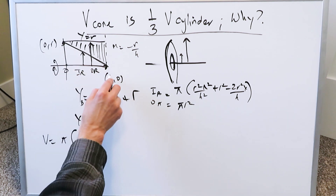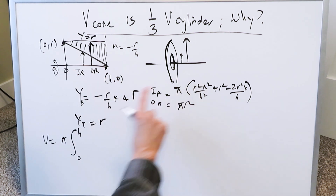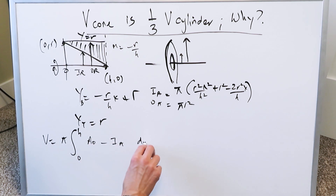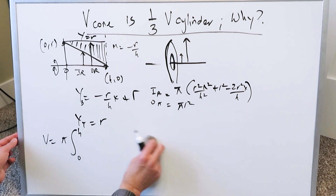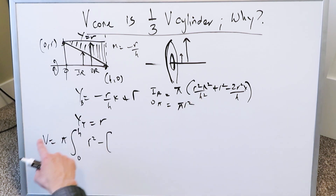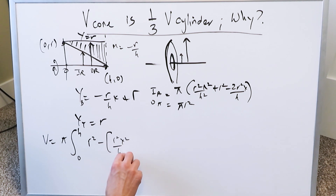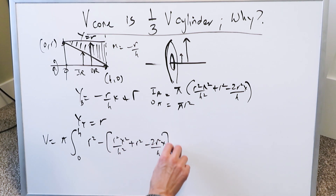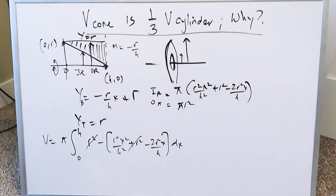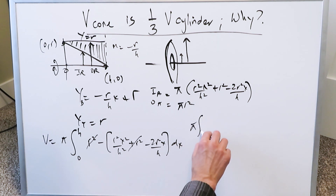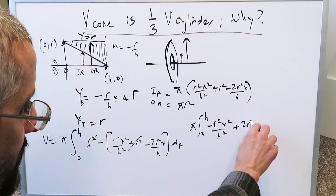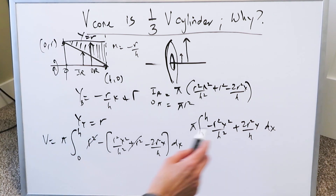Now we set up the integral along the x-axis from 0 to h. Isolating the π out front, we integrate the outer area minus the inner area with respect to x. The outer area is just r², and the inner area is r²x²/h² + r² − 2r²x/h. When you open up the subtraction, r² cancels with r², leaving: π times the integral from 0 to h of (−r²x²/h² + 2r²x/h) dx.